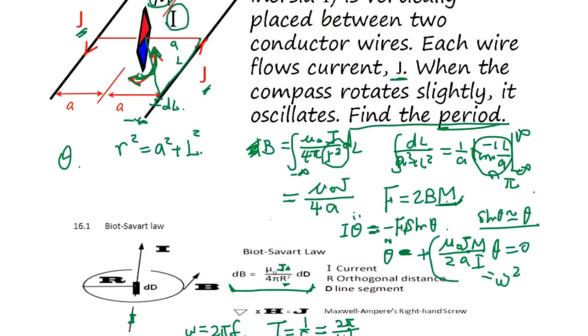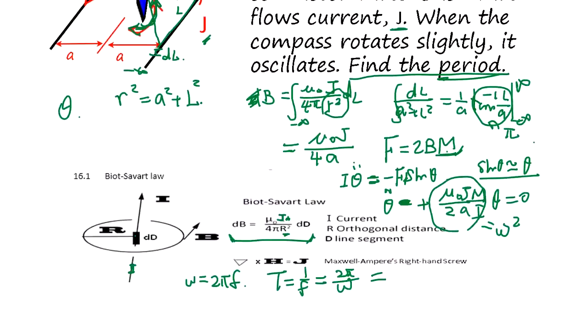Taking omega from our equation, the period is going to be pi times the square root of 2JM over AI. That's the answer.